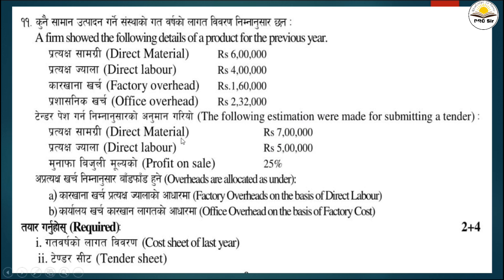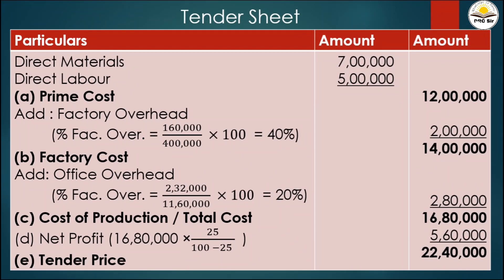In the tender sheet, direct material is 7 lakh and direct labor is 5 lakh, which equals 12 lakhs as prime cost.